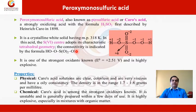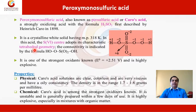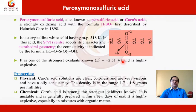The properties of peroxy monosulfuric acid (Caros acid): it is a crystalline white solid with a melting point of 318 Kelvin. In this acid, the sulfur center adopts a characteristic tetrahedral geometry. The connectivity is indicated by the formula HO-O-SO2-OH. It is one of the strongest oxidizers known to us, with a standard oxidation potential E0 equal to plus 2.51 volts, which is very high, justifying that it is the strongest oxidant known to us. It is also highly explosive in nature.